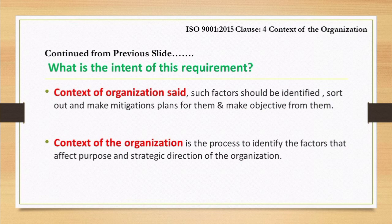So context of the organization says such factors should be identified, sought out, and mitigation plans should be made for them, and also objectives should be made from them. Context of the organization is the process to identify the factors that affect the purpose and strategic direction of the organization.